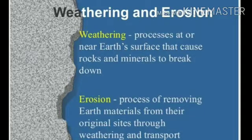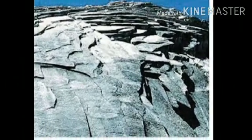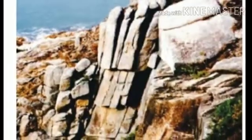Let's recall what we already studied in previous classes. Weathering is the process which takes place on the earth's surface causing the breaking of rocks and the minerals in them. Erosion is the process of removing the earth's material from the original site through weathering and transportation — that is, deposition and transportation from one place to another.